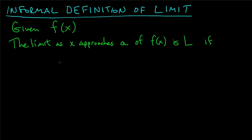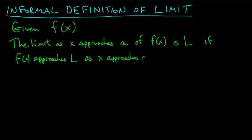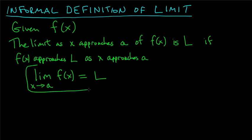If f of x gets close to the number L as x gets close to a, then we say the limit of f of x as x approaches a is L. We write this as: lim as x → a of f(x) = L. That's the notation for the limit.